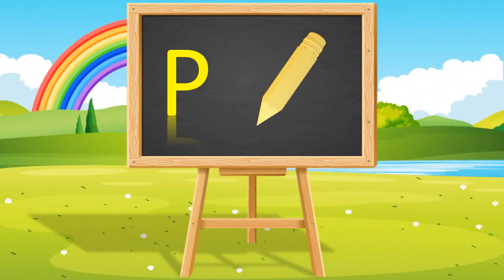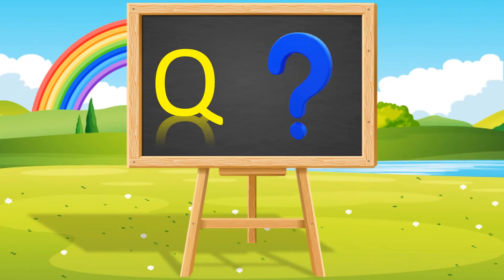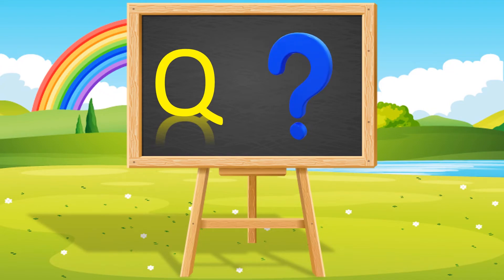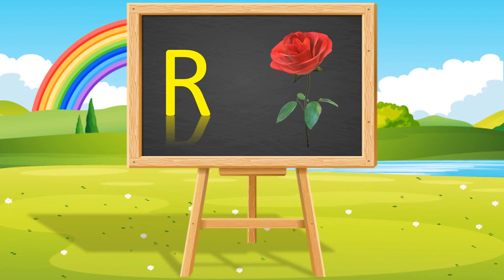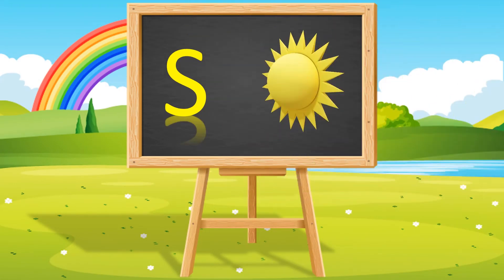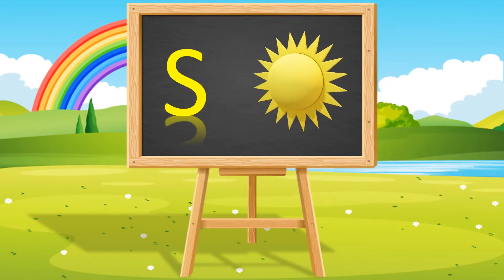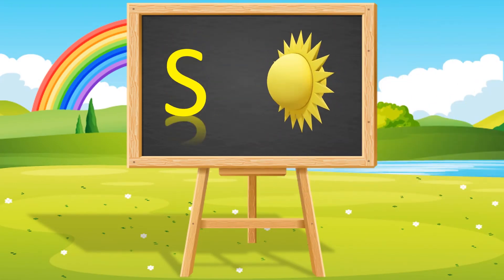P for pencil. Q for question mark. R for rose. S for sun.